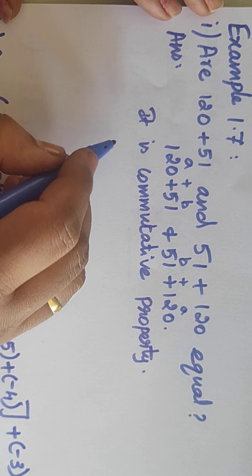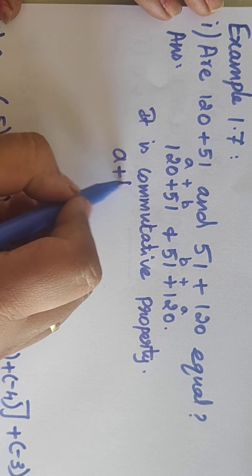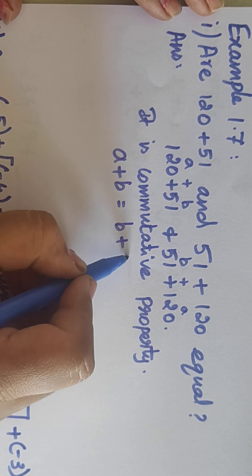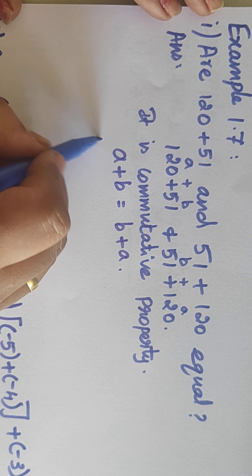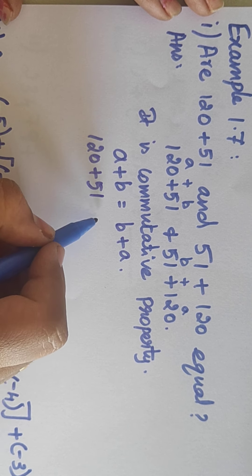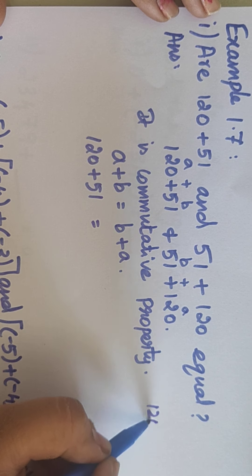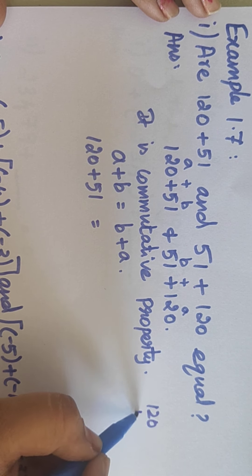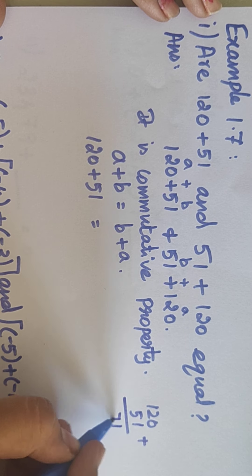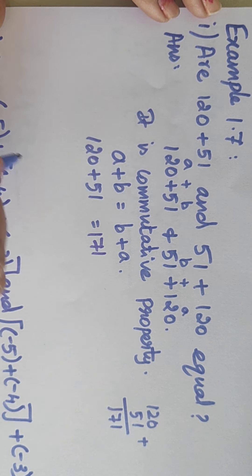Commutative property means A plus B equals B plus A. So 120 plus 51 — first we have to add this. That is 120 plus 51 equals 171. Here we can write it as 171.